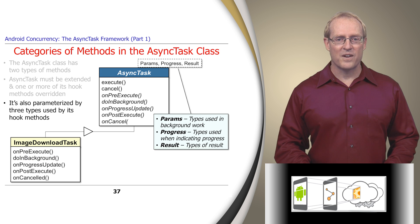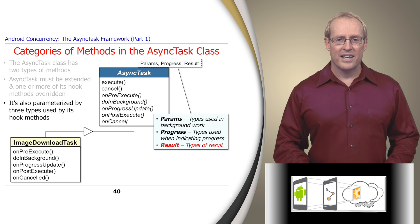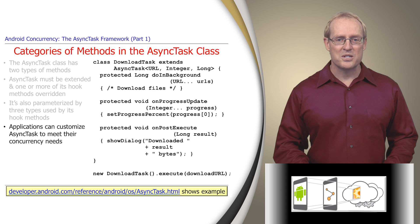The async task class defines three generic parameters used by its hook methods to identify: the type sent to the task that runs in a background thread, the type of progress units published during background computations, and the type of the result returned when doInBackground finishes executing. An application instantiates these parameters, extends async task, and overrides any or all of its hook methods as needed to customize their behavior to meet its concurrency needs.